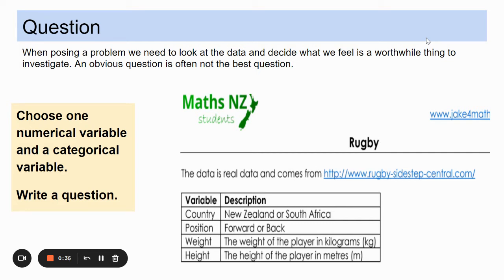I'm looking at the one that has rugby players information. We've got some variables there: New Zealand versus South Africa positions, forward position in a rugby team and back position in a rugby team. If you don't know much about rugby you have to often find out what it's all about before you start writing your question. Then there's the weight of the players in kilos and the height of the players in metres.